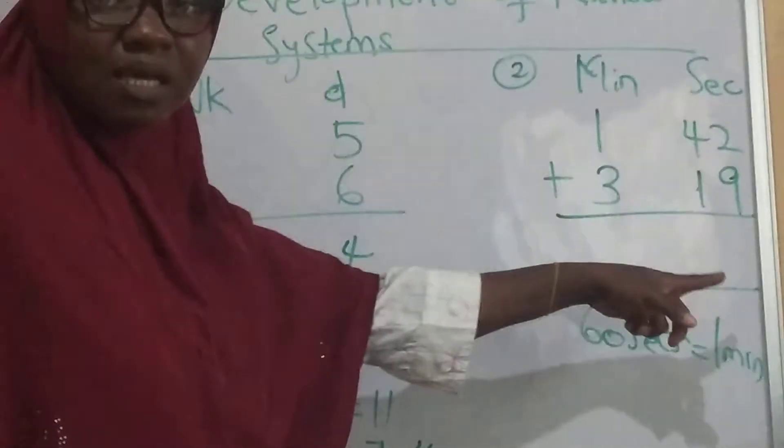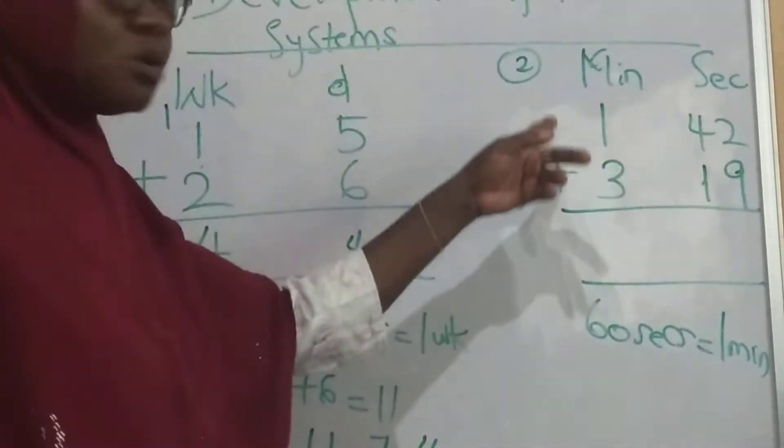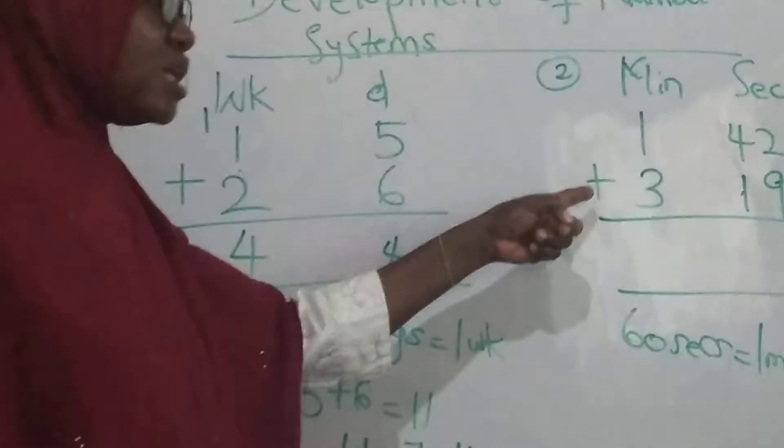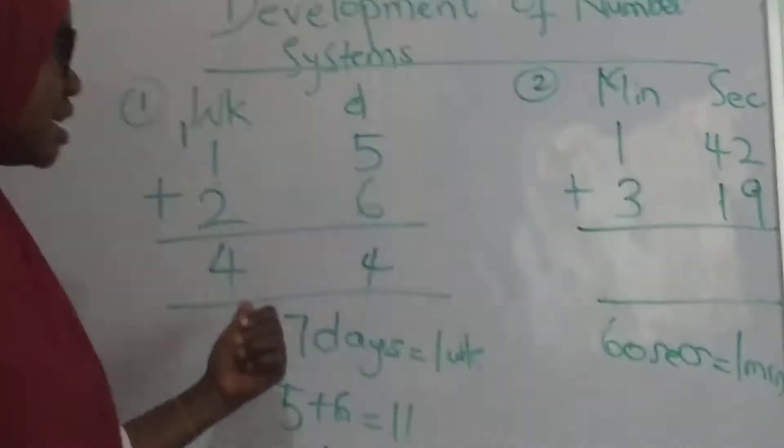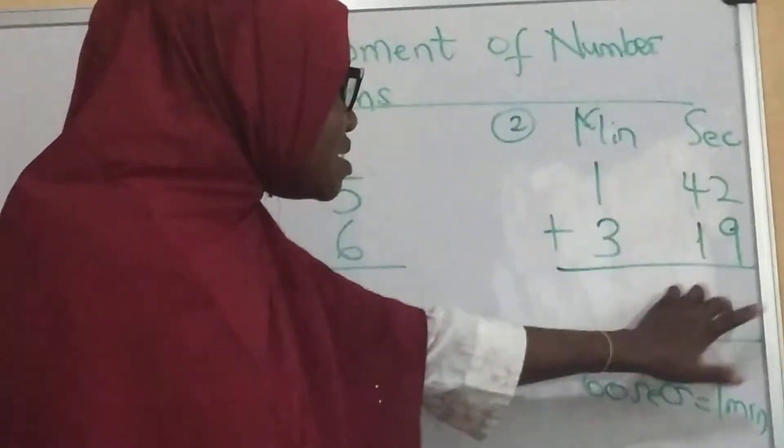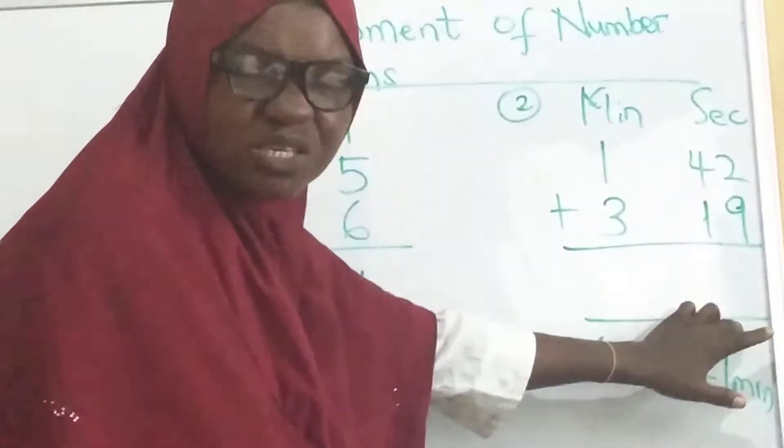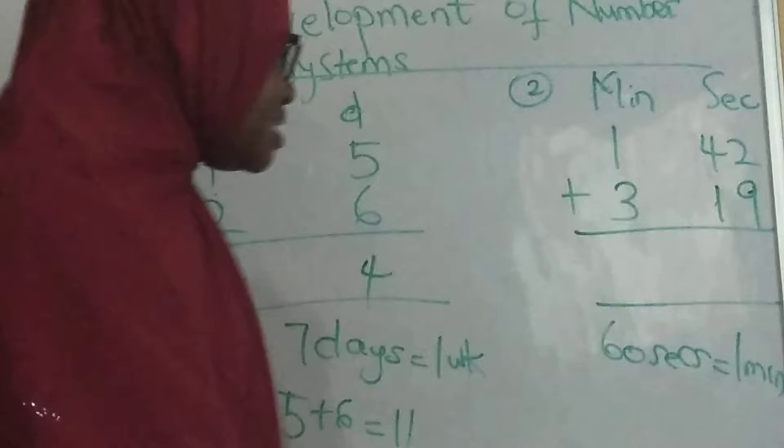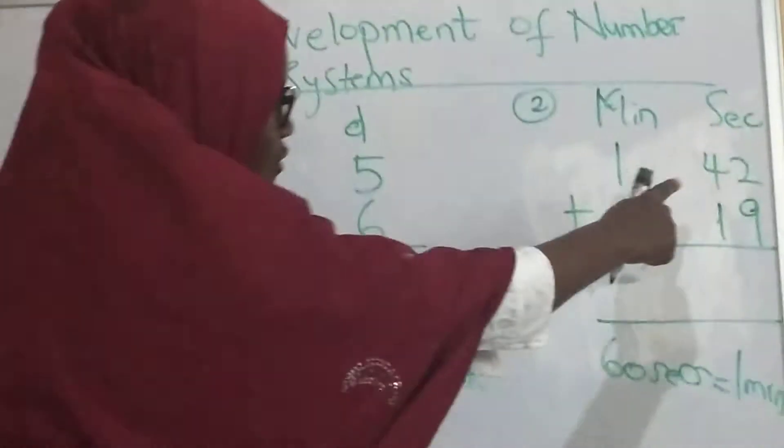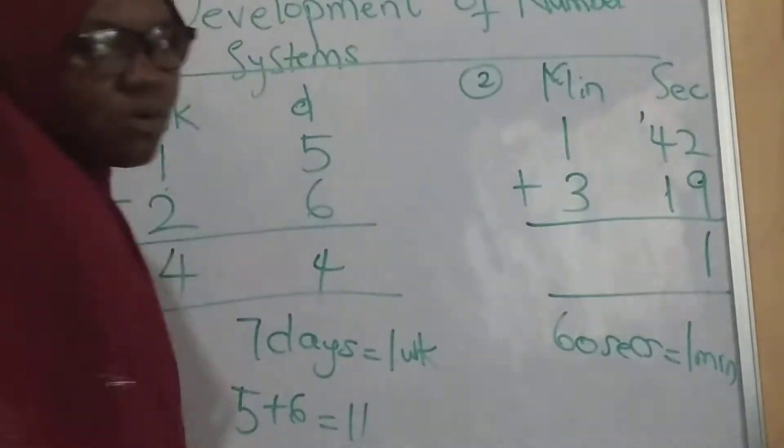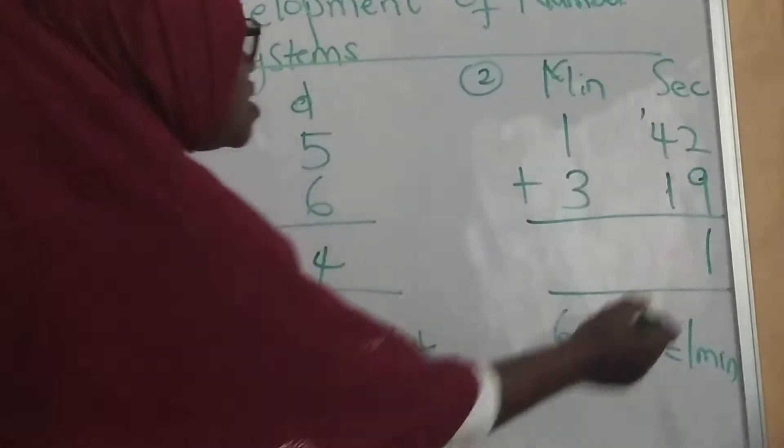The moment it exceeds 60 seconds, you have to move it up to this place. Just like we did here, whatever you are going to add under these seconds must not be 60 or more than 60. Now let's see how it goes. 2 plus 9 is 11, right? We have the one here. 1 plus 4 is 5. 5 plus 1 is 6.